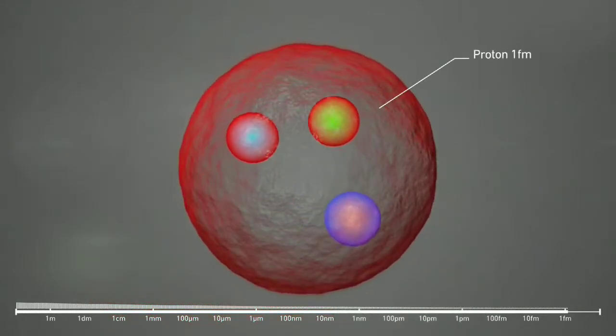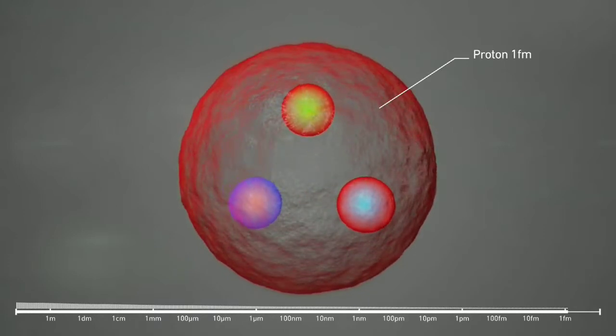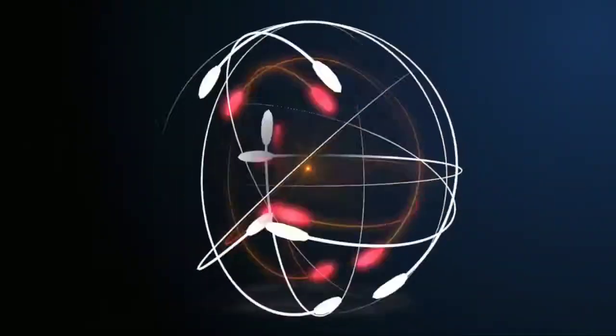Similarly, scientists also discovered other particles inside the atom, such as protons, neutrons, and quarks. And they tried to find out how the fundamental particles of the atom are arranged inside.